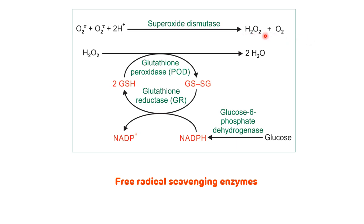The hydrogen peroxide produced is then converted to water by glutathione peroxidase, which is a selenium-dependent enzyme. Glutathione peroxidase also converts reduced glutathione into oxidized glutathione. Glutathione itself is a tripeptide synthesized from three amino acids: glutamic acid, cysteine, and glycine.